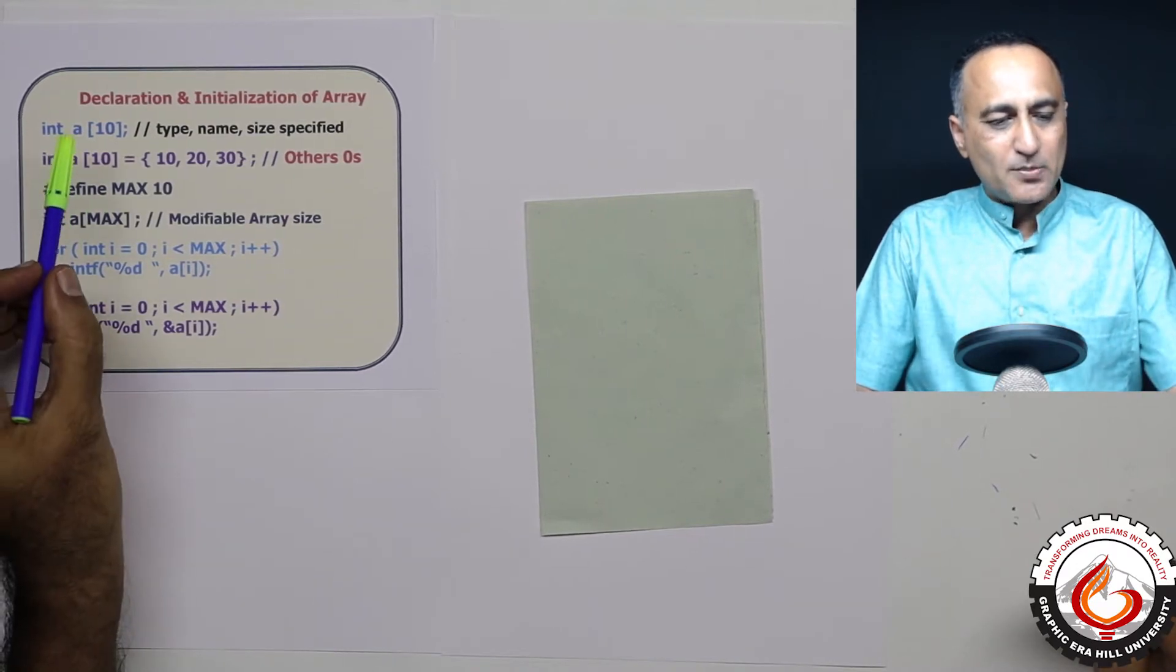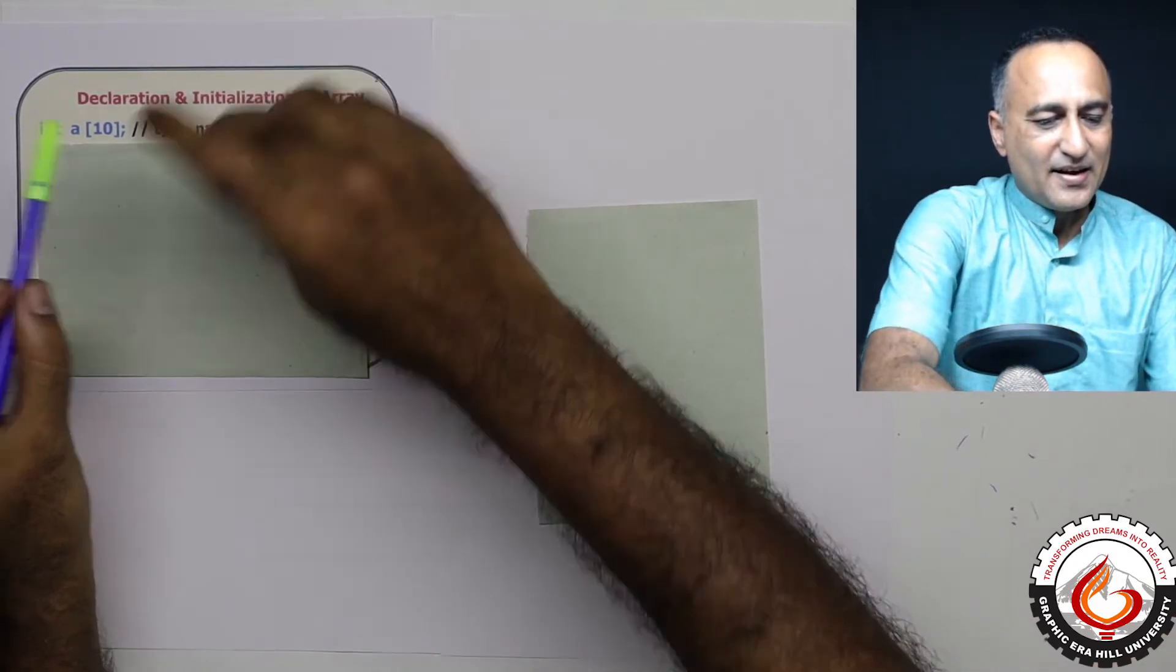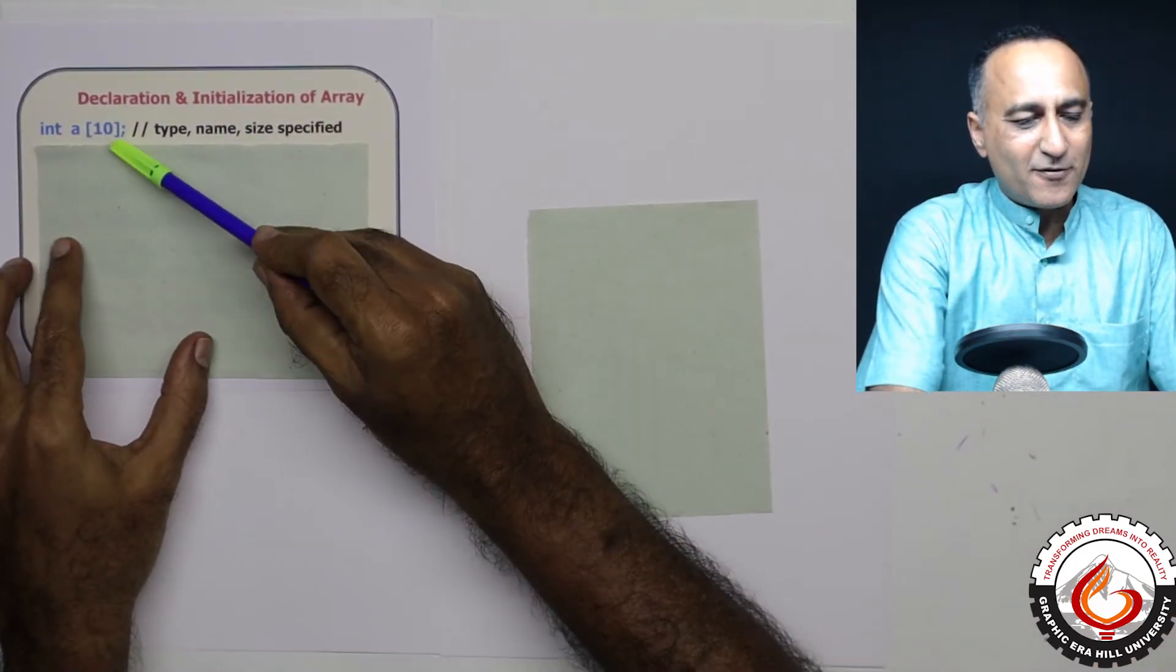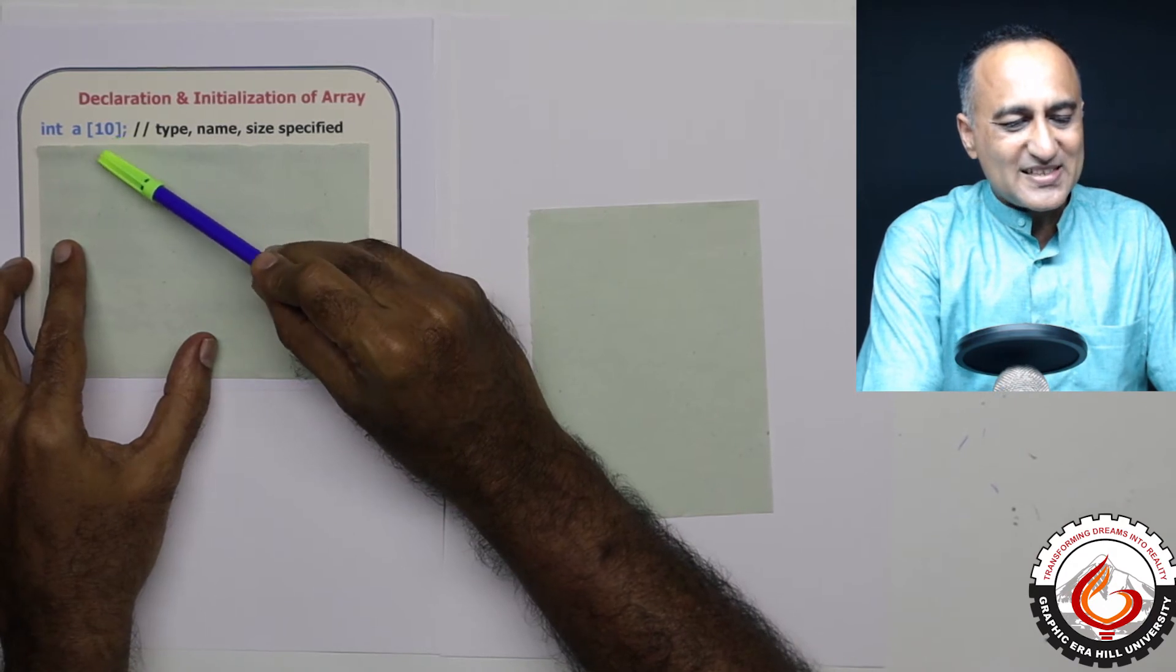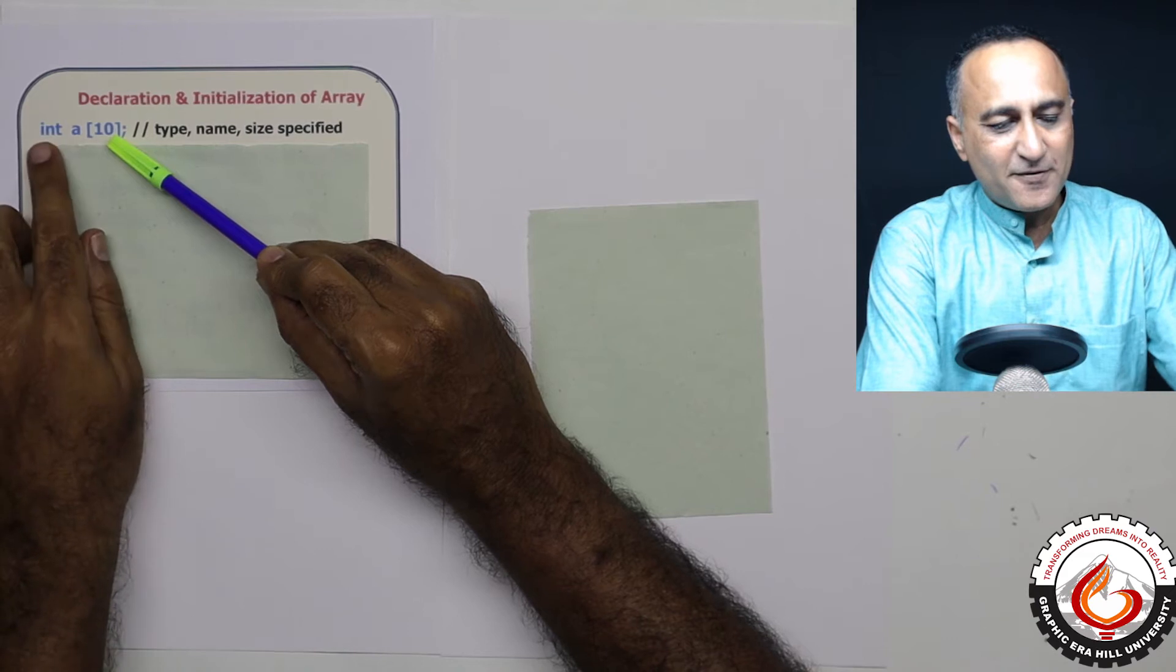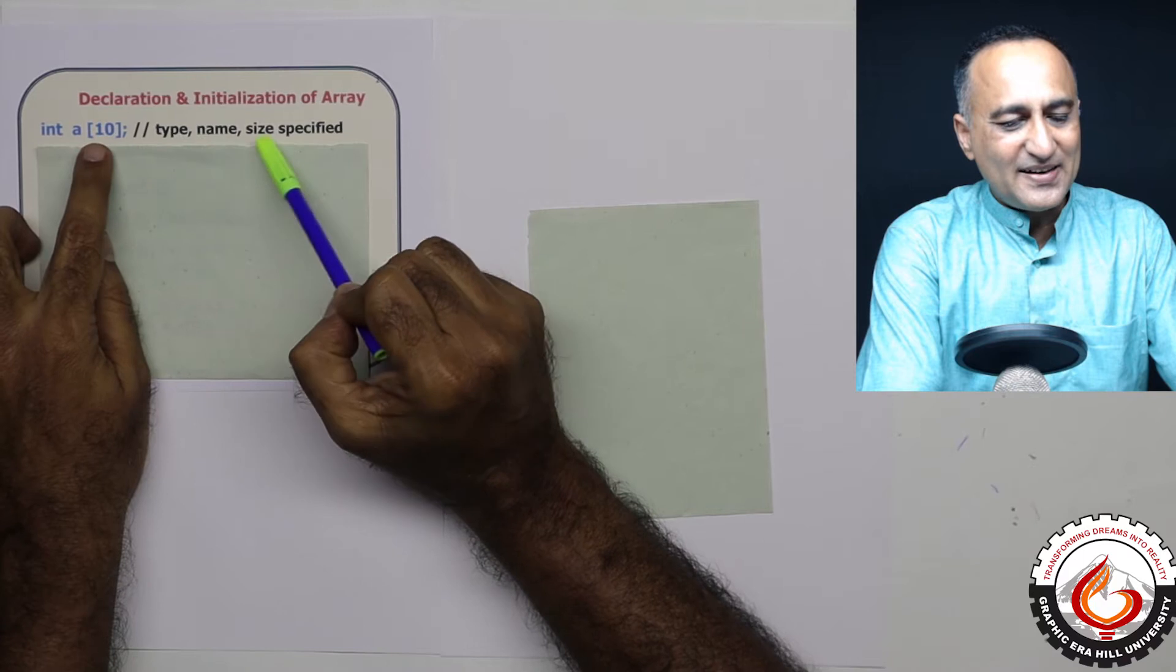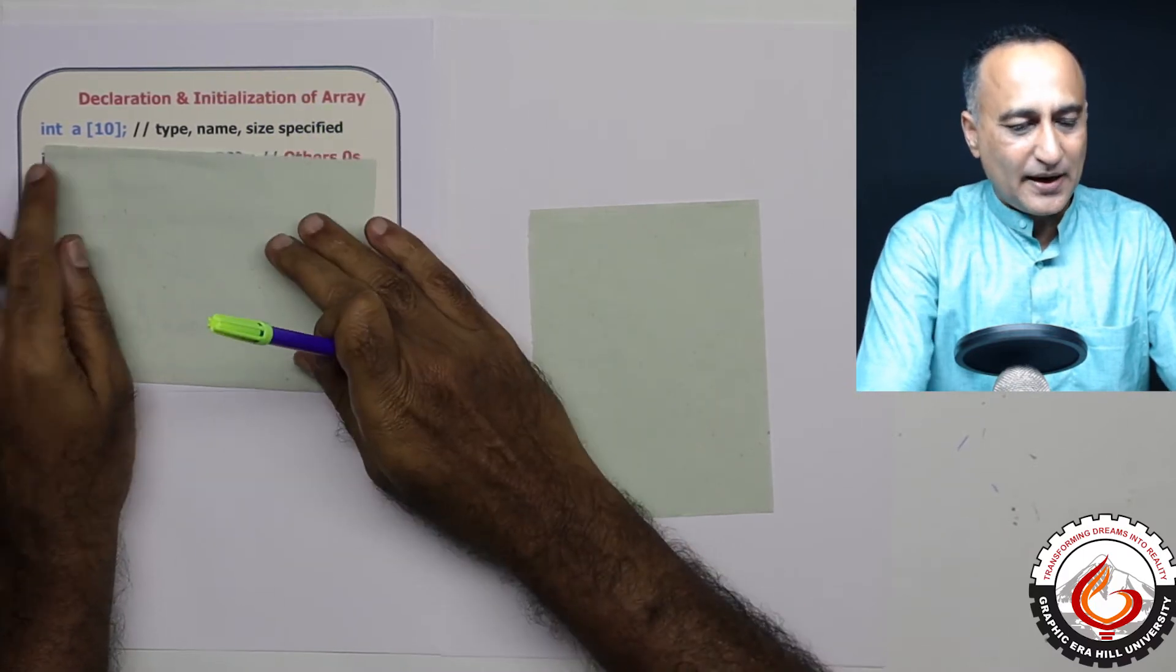I've already talked about declaration. So here what I am doing is I have declared an integer variable a of 10. What this indicates is that a is an array of 10 elements. The first thing indicates it's an integer. Next thing is the name, and 10 indicates the size of the array.